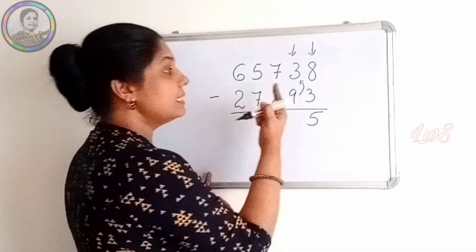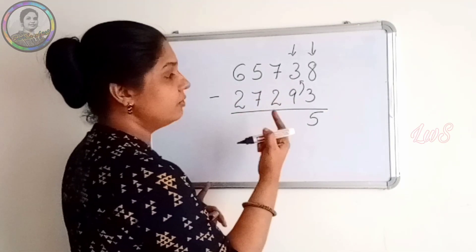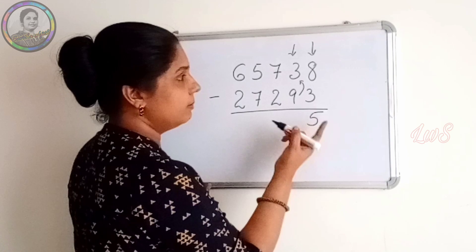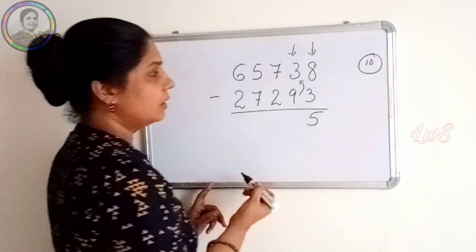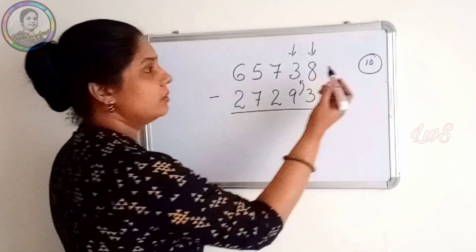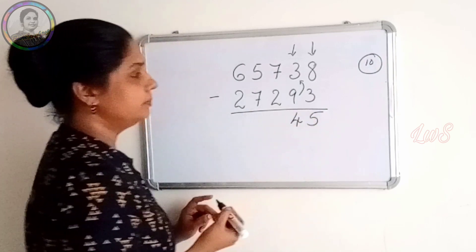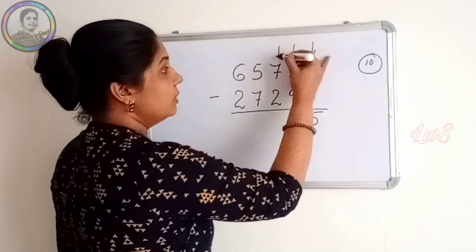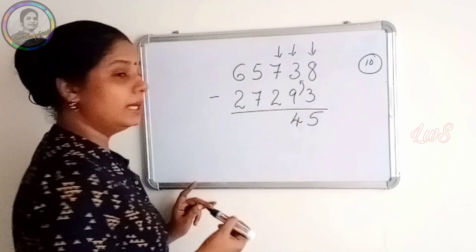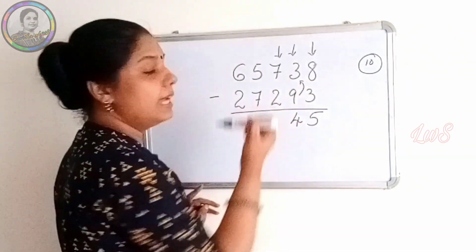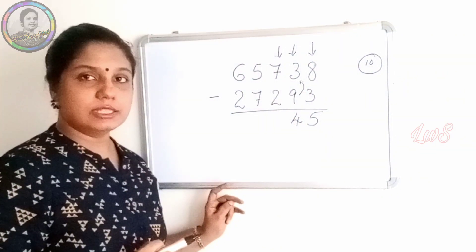But since we did the reverse subtraction, we have to write the complement from 10. So 10 minus 6, we write here 4. Now here we have 7 minus 2 — it is the actual subtraction, answer is 5.